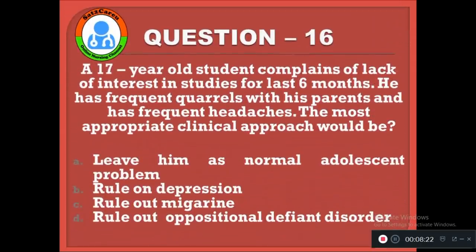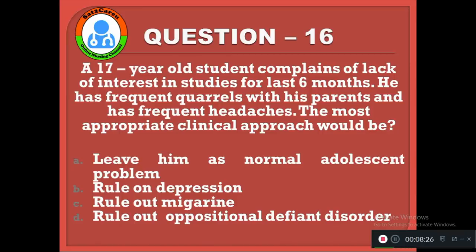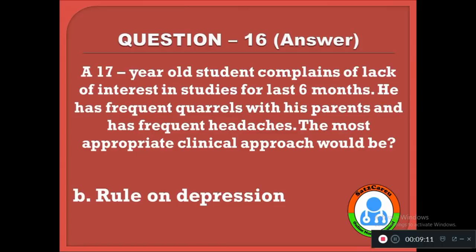Question 16: A 17-year-old student complains of lack of interest in studies for the last six months, frequent quarrels with his parents, and frequent headaches. The most appropriate clinical approach would be — option A: leave him, normal adolescent problem, B: rule out depression, C: rule out migraine, D: rule out oppositional defiant disorder. The correct answer is B, rule out depression. Childhood onset depression may result in lack of interest in studies, frequent fighting with parents, and headaches.